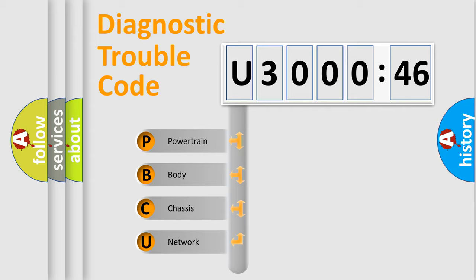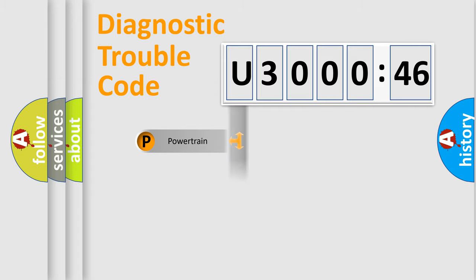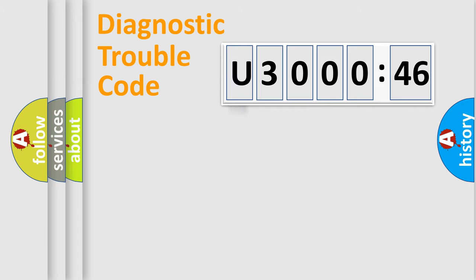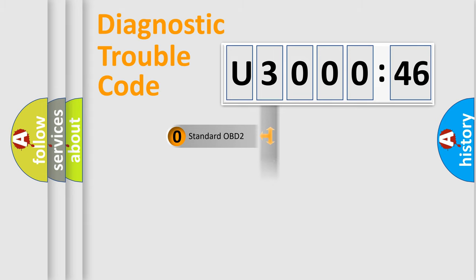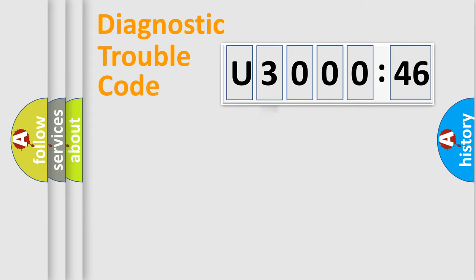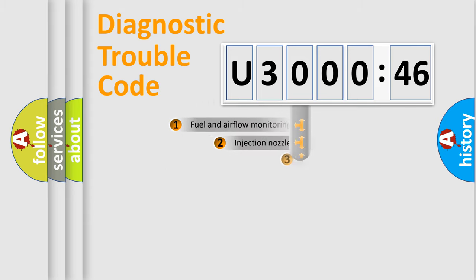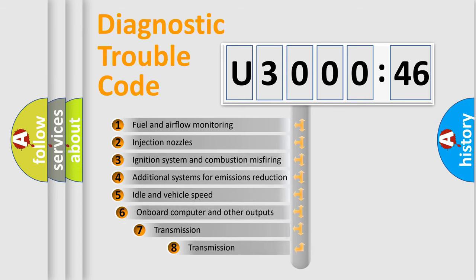We divide the electrical system of an automobile into four basic units: Powertrain, Body, Chassis, and Network. This distribution is defined in the first character of the code. If the second character is expressed as zero, it is a standardized error. In the case of numbers 1, 2, or 3, it is a more specific expression of a car-specific error.